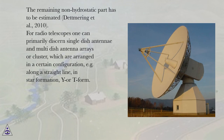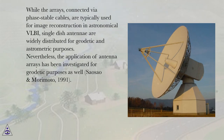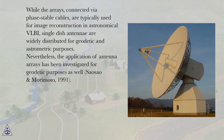For radio telescopes one can primarily discern single-dish antennae and multi-dish antennae arrays or clusters, which are arranged in a certain configuration — for example along a straight line, in star formation, Y or T form. While the arrays, connected via phase-stable cables, are typically used for image reconstruction in astronomical VLBI, single-dish antennae are widely distributed for geodetic and astrometric purposes. Nevertheless, the application of antenna arrays has been investigated for geodetic purposes as well (Seasau and Murimoto, 1991).